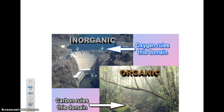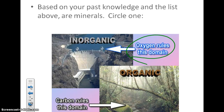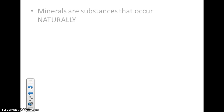Are minerals organic or inorganic? Organic means made of things that were living or are living — something that has to do with life. Inorganic means never living, not once living, never will be living. Minerals tend to fall in the inorganic domain. It doesn't count as a mineral unless it is inorganic, so you should be circling inorganic. Minerals are not made of things that have been alive.